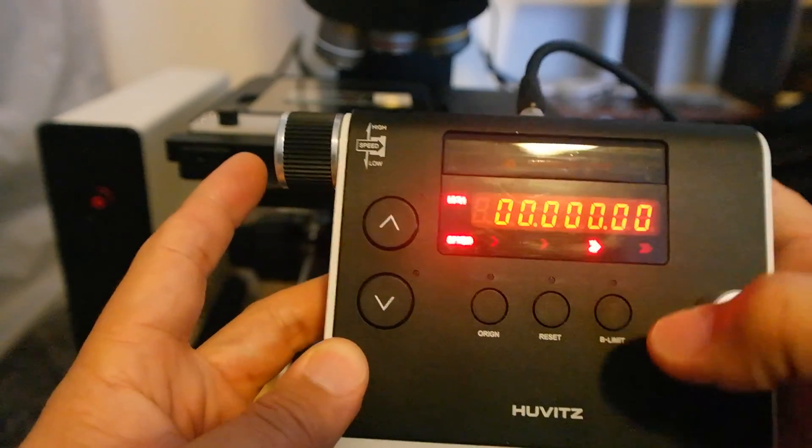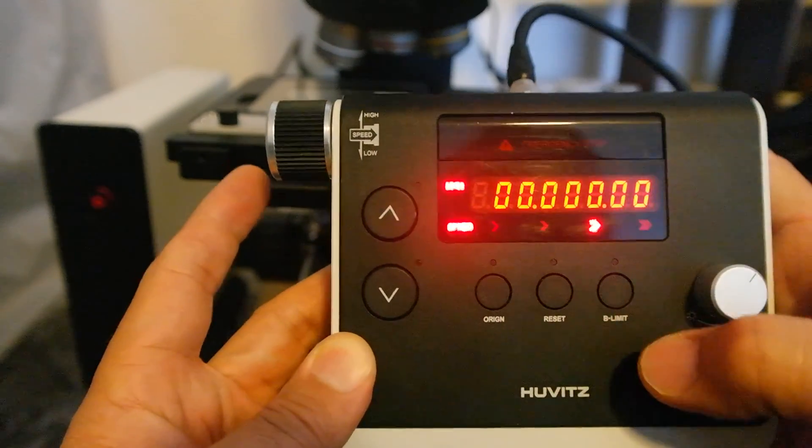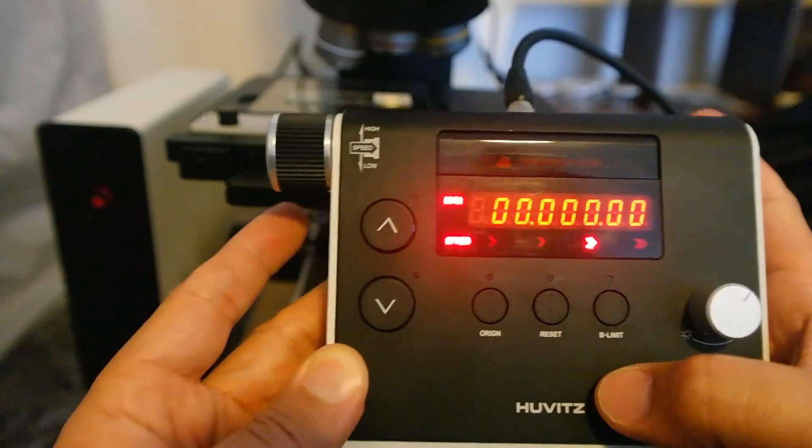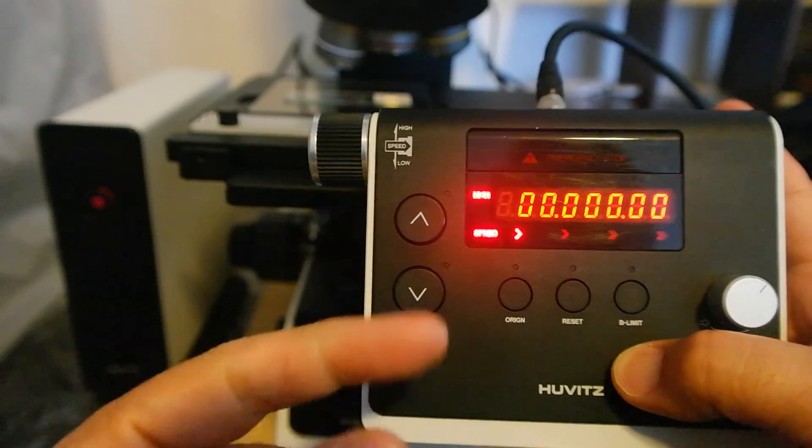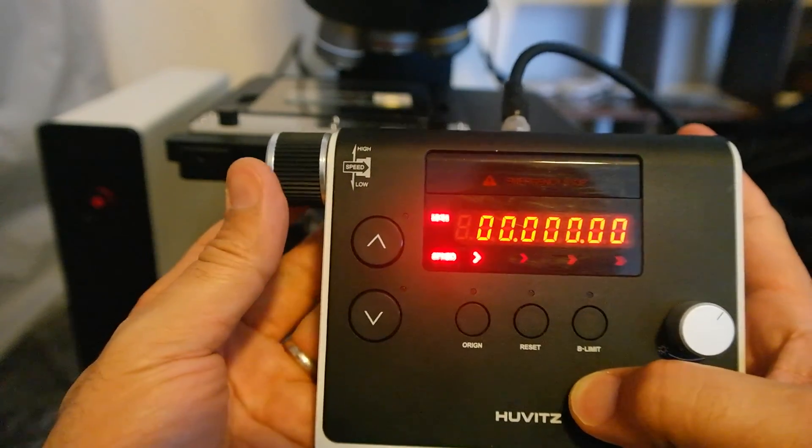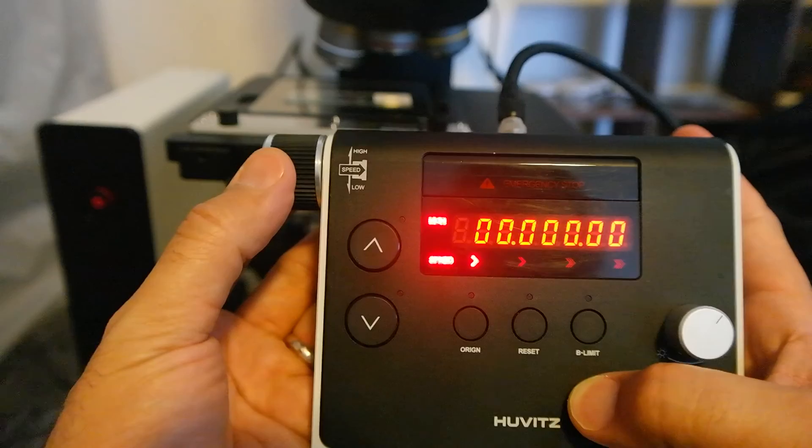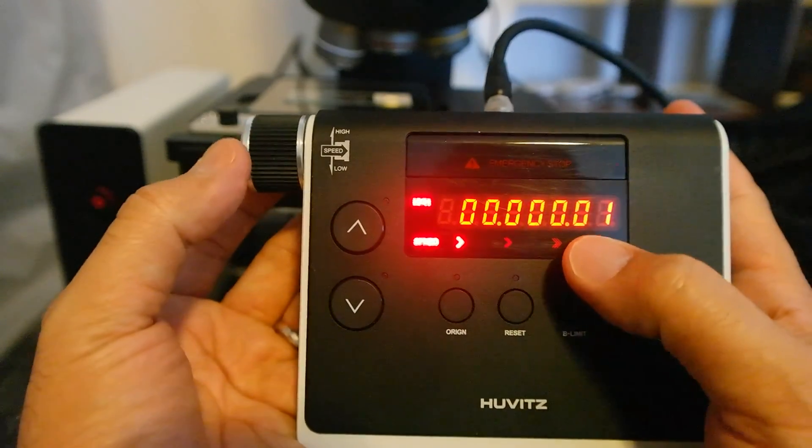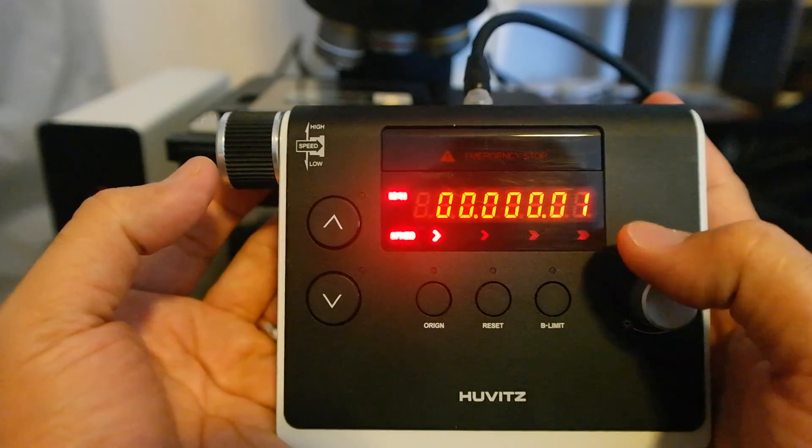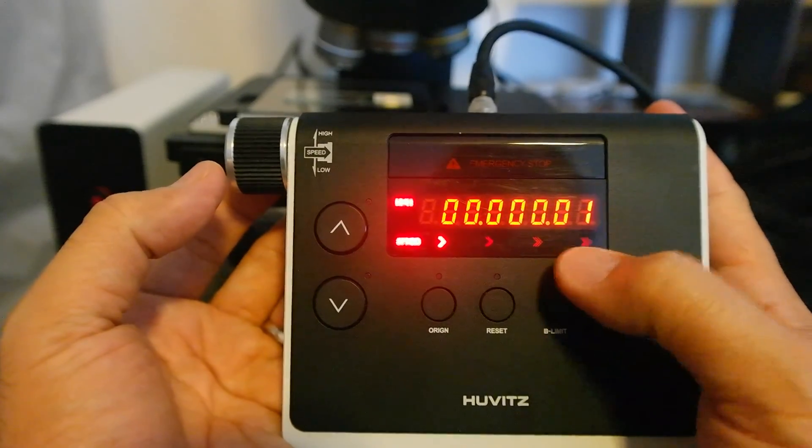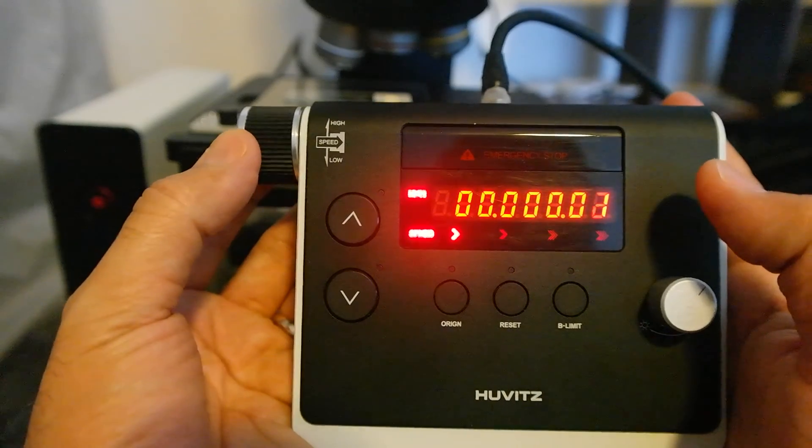For the speed here, since we are in different mode, let me show you what happens. Basically if I go to the lowest speed right now and I use this knob to move this, as you see it is 0.01, which is just 0.01 micron or 10 nanometer, and I can go to that 20.